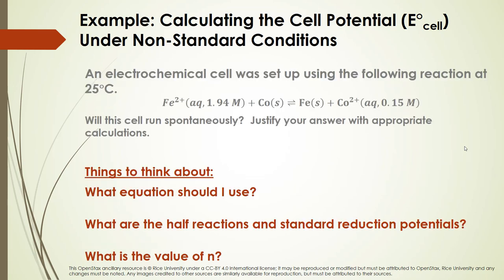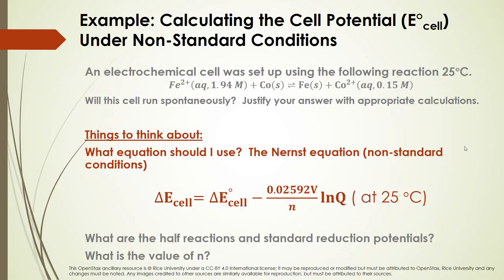We need the Nernst equation because we're under non-standard conditions — the concentration is not 1 molar. In the Nernst equation we need the standard cell potential and the value of N, the number of electrons transferred in the balanced chemical reaction.